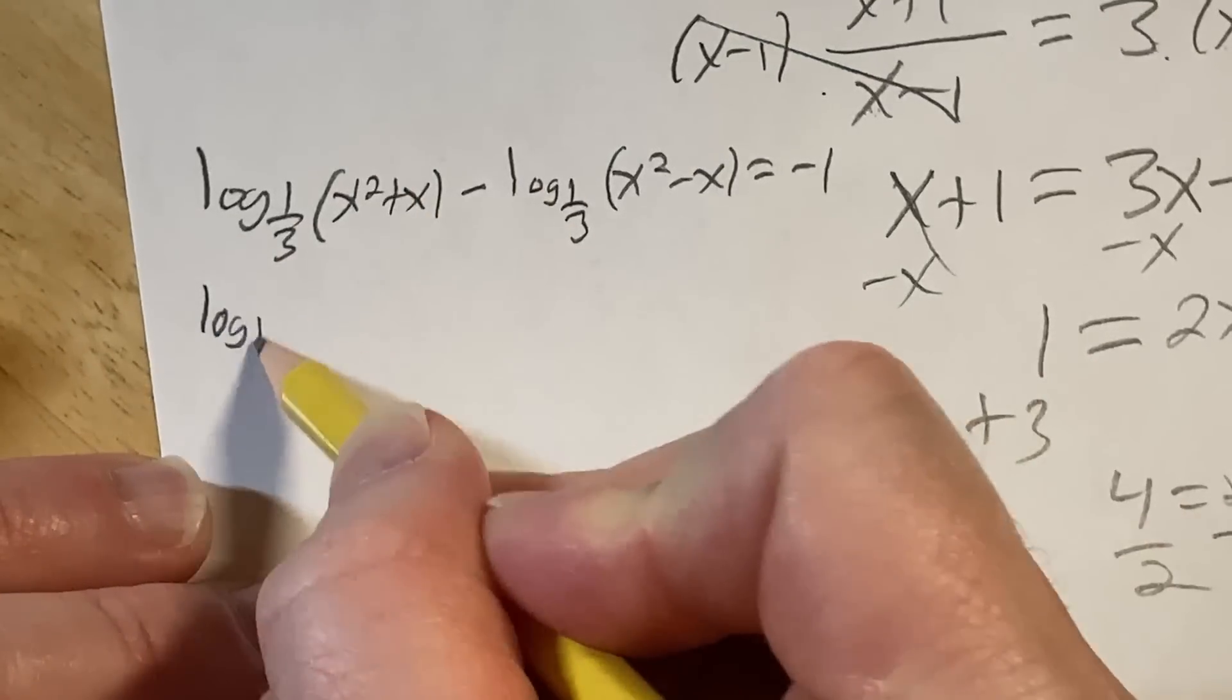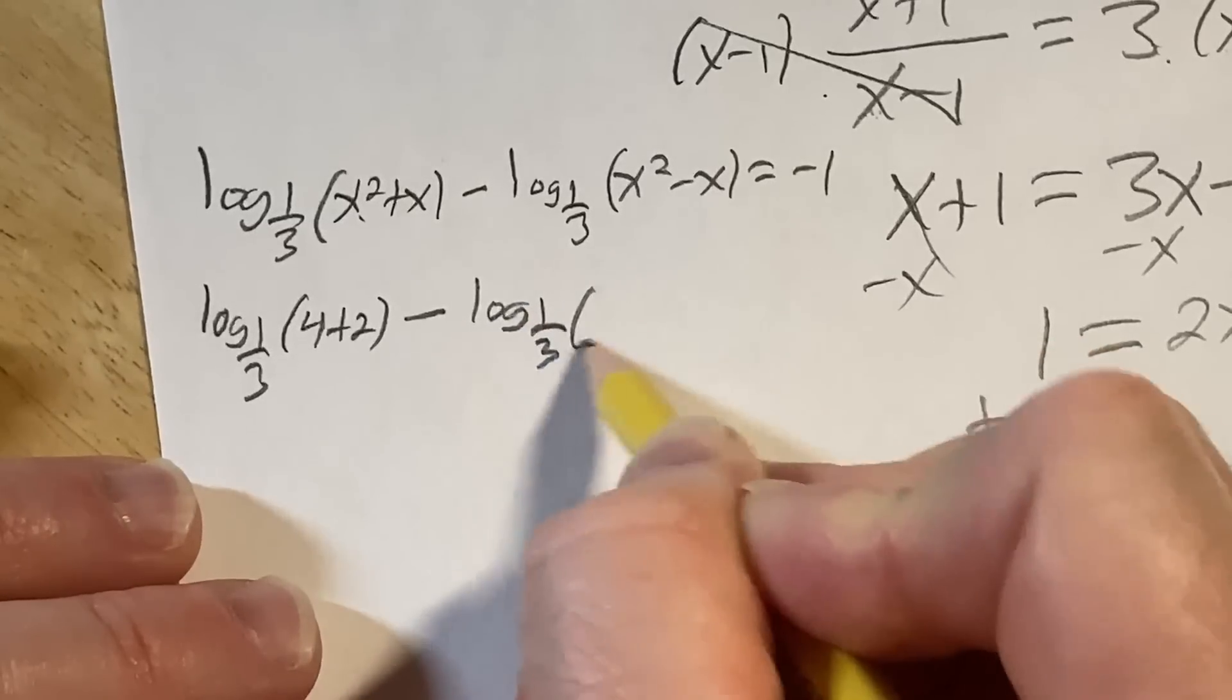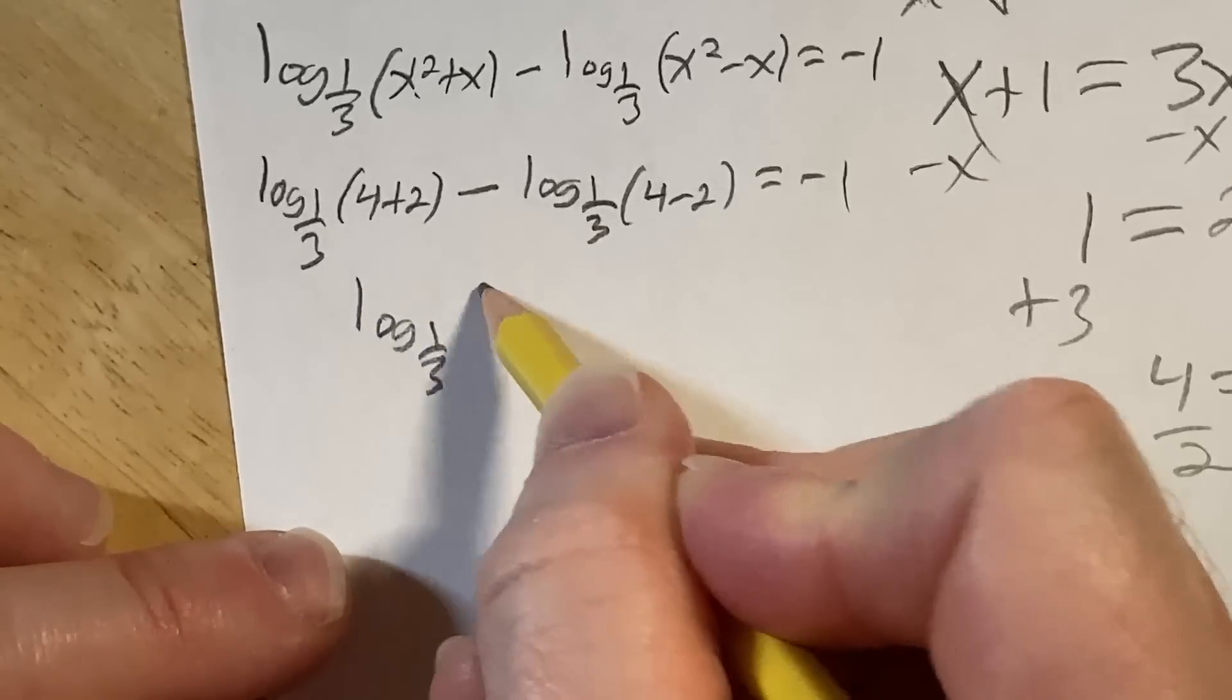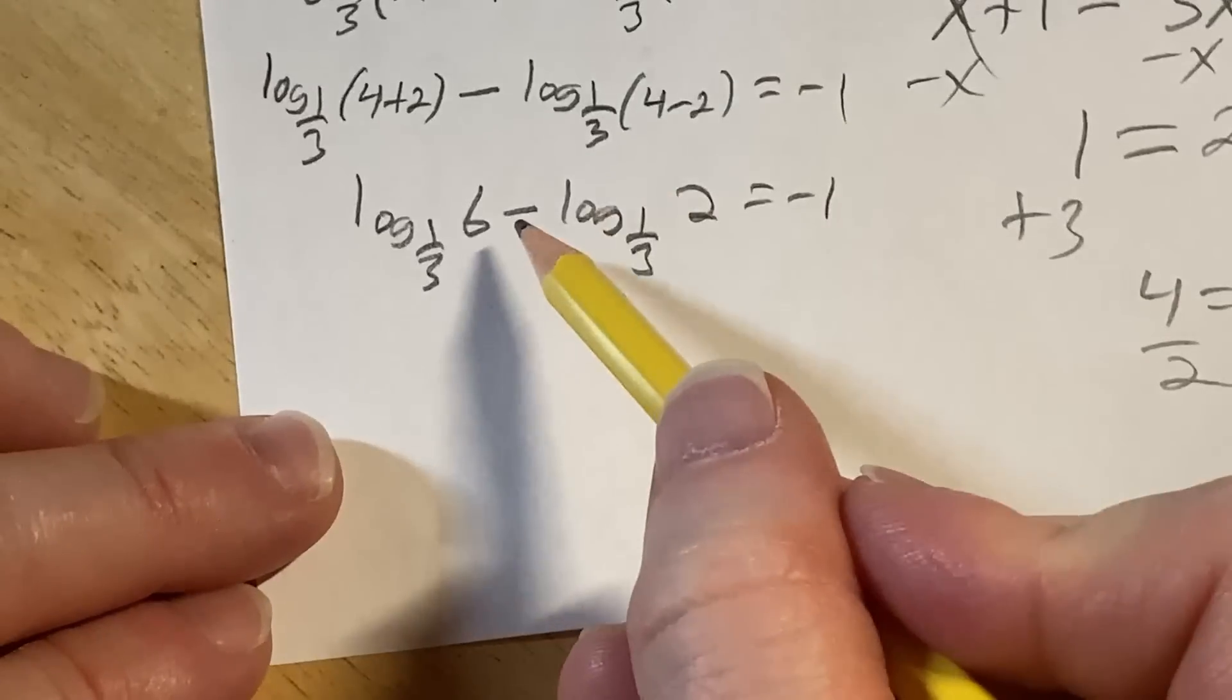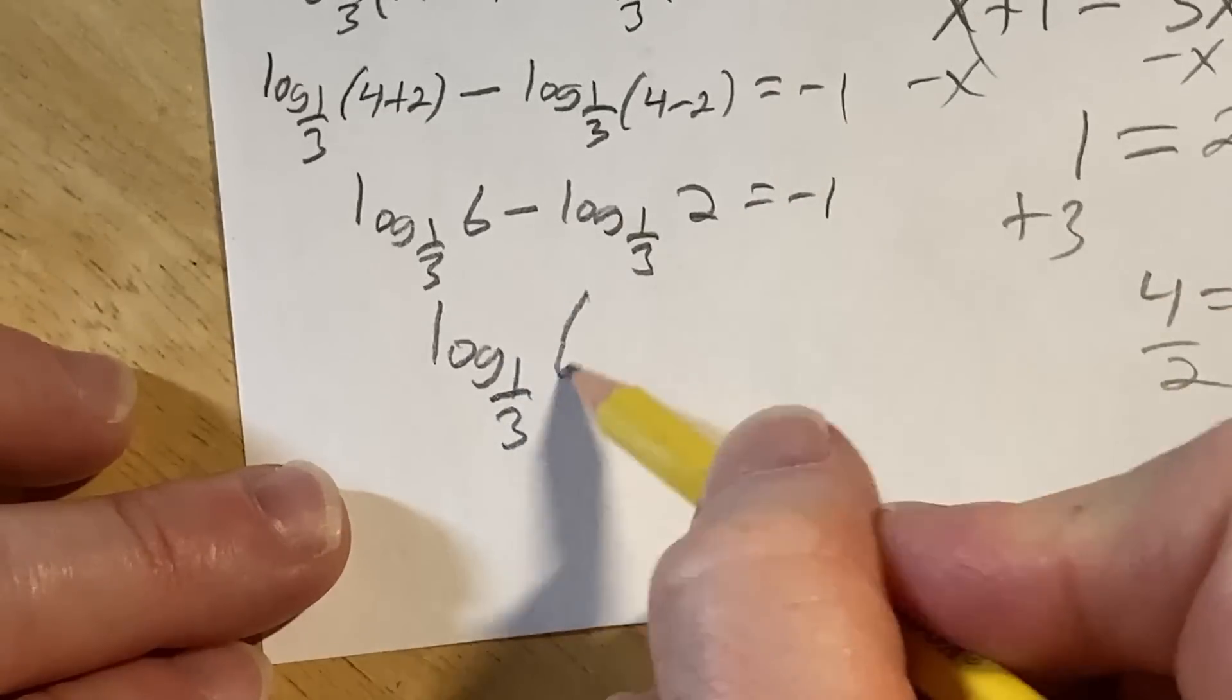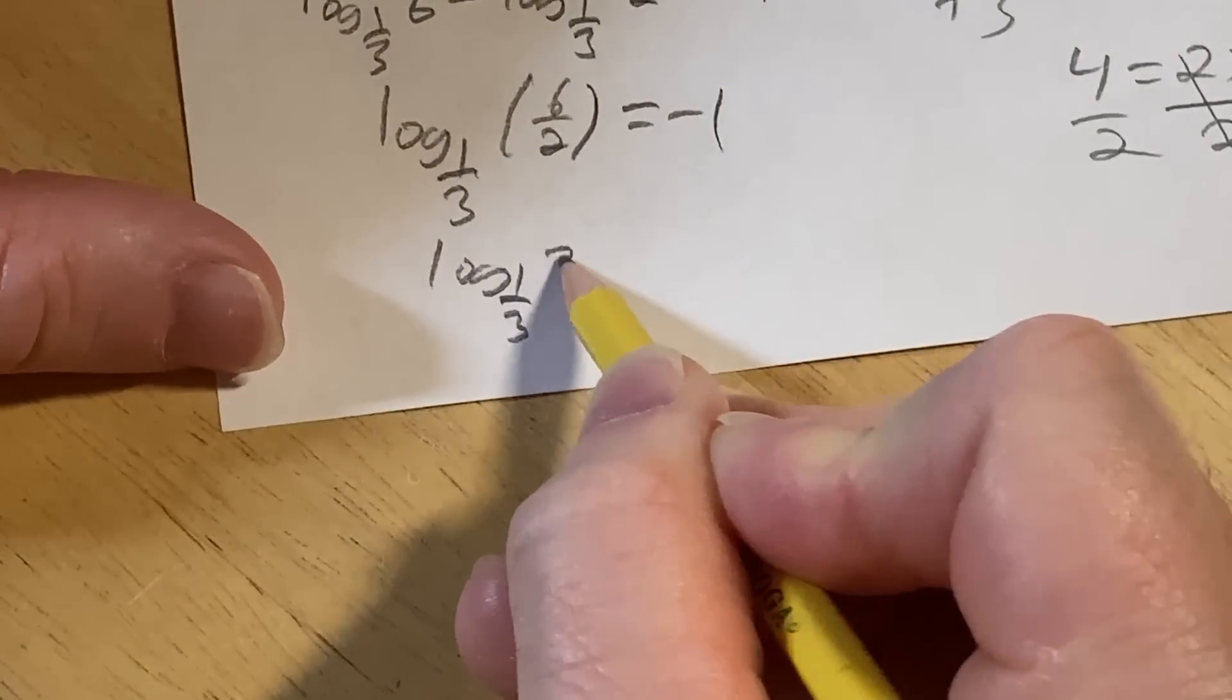So it's log base one-third, two squared is four, so it's four plus two, minus log base one-third of two, so four minus two, and that's equal to negative one. It's log base one-third of six minus log base one-third of two, and that's equal to negative one. Now we use that quotient rule we talked about earlier. So the fraction turns into, the subtraction turns into a fraction, so log base one-third of six over two is equal to negative one. So log base one-third of three is equal to negative one.